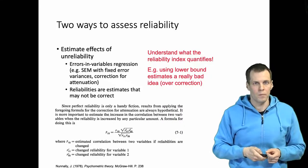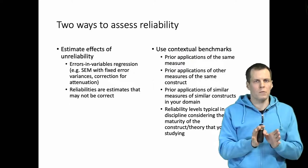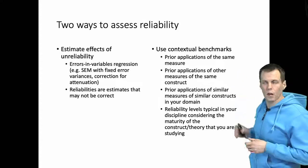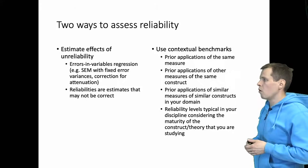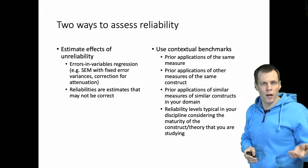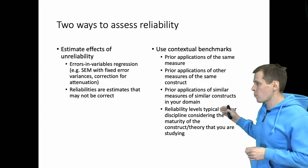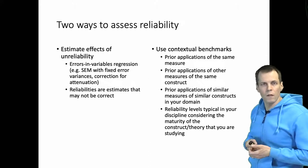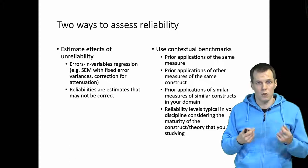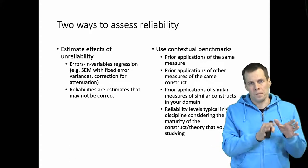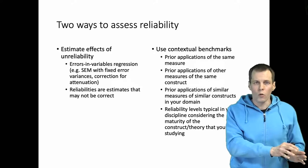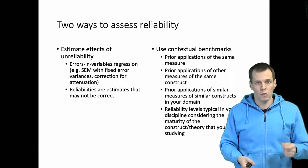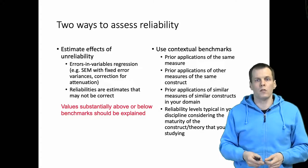So this is one strategy: calculate the model that takes the reliability estimates into account and corrects the regression estimates based on those reliability estimates. The second strategy is to use contextual benchmarks. For example, you can compare your reliability estimates against reliability estimates calculated from prior applications of the same measure, or you can compare against prior measures—different measures of the same constructs, prior application of similar measures of similar constructs in your domain, or reliability levels that are typical for research that is on the same level of maturity as your studies. So instead of looking at what was Nunnally's opinion 40 years ago, you look at what are the typical reliability levels in your field now, and then you make a comparison. Is your reliability better or worse, and after that you need to explain.